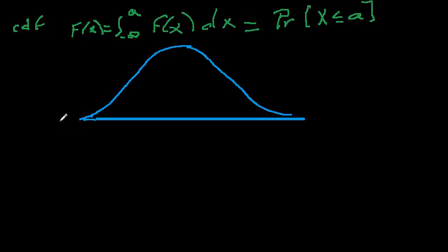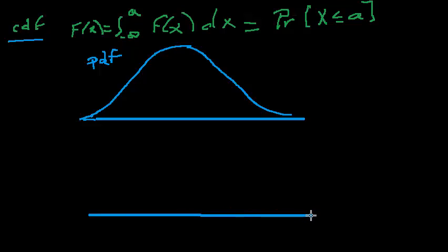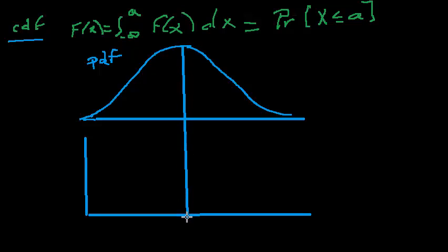Let's talk more about the normal cumulative distribution function. I've drawn another PDF here and what I want to do is draw the CDF below it, then show how the two are related and how we get our probabilities from the CDF and use them in revenue management. Let me draw the CDF below the PDF, with a y-axis and a mean — the mean is at the midpoint of the distribution, and we'll call that mu.